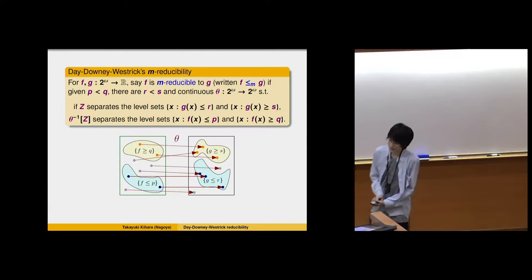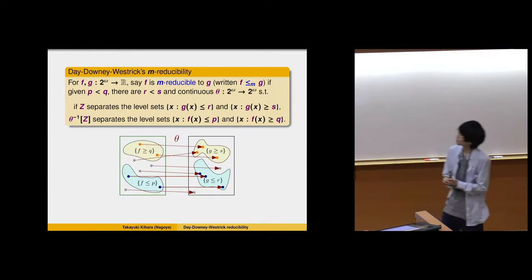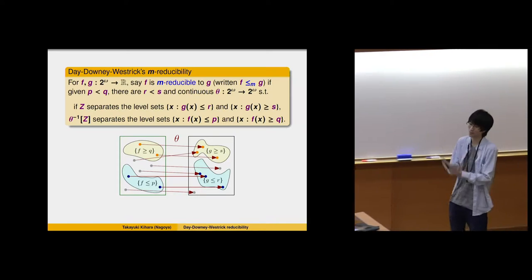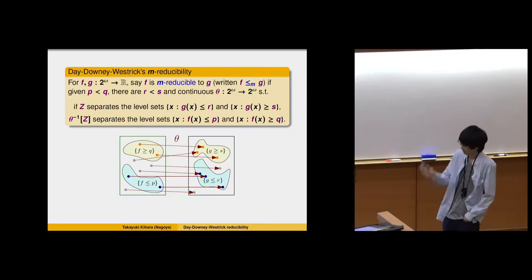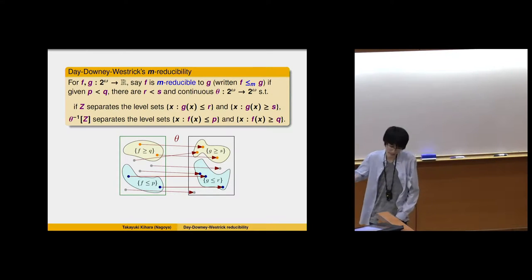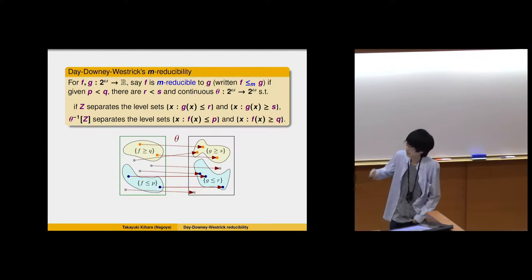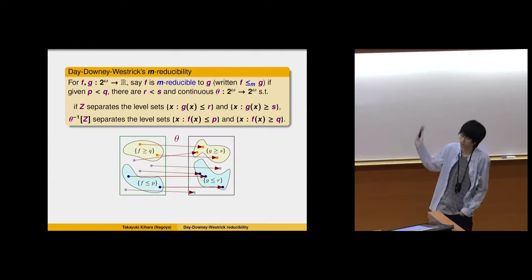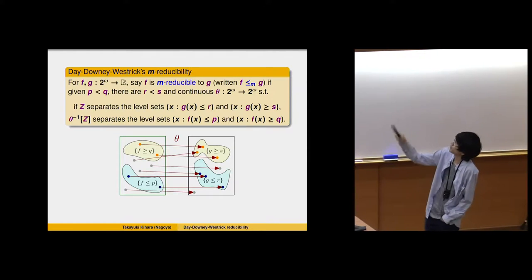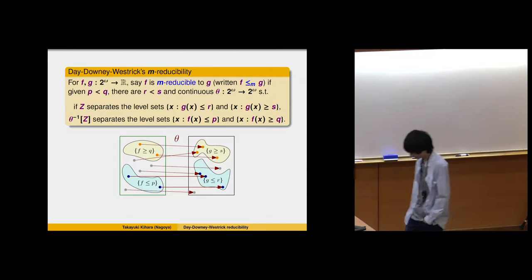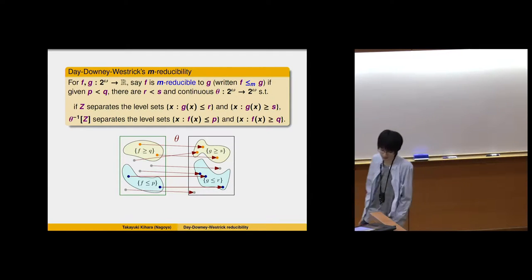To simplify our argument, we assume the domain of a given function is Cantor space. As already studied by Dainy-Westerick, we can assume a function has a more general domain without affecting results. But to simplify, we assume every function has domain in Cantor space and range on the real line.